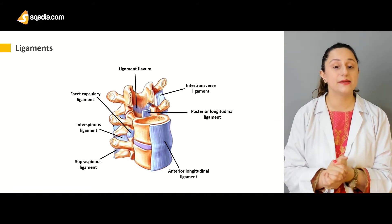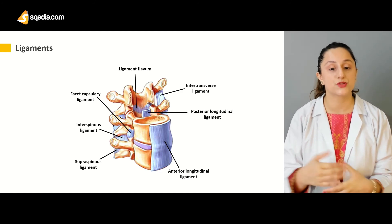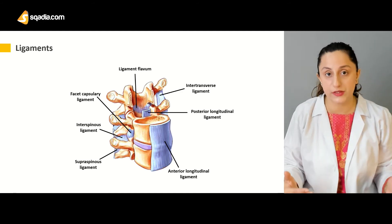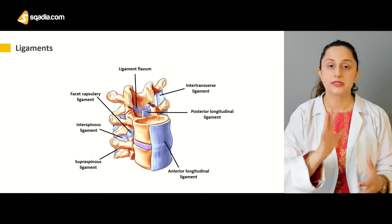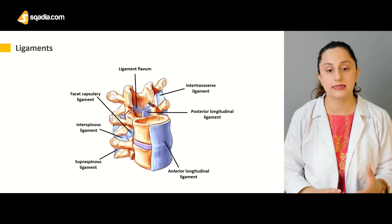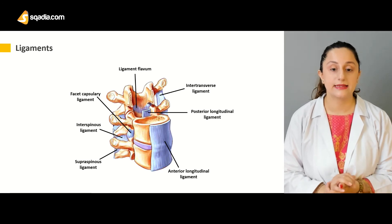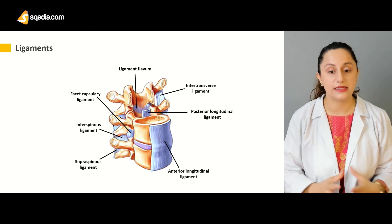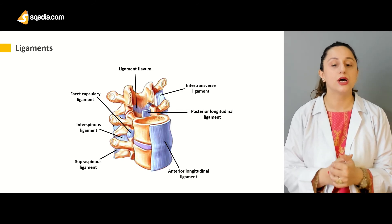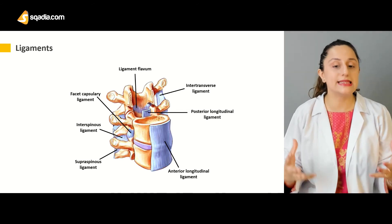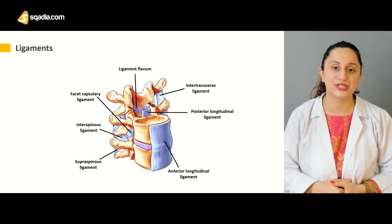Finally, we have the ligamentum flavum, and it is attached posteriorly to the arch of the vertebra. The arch of all of the vertebras are being lined by this ligamentum flavum, and it is one of the major ligaments in the vertebral column. All of these ligaments are basically providing stability to the vertebral column.